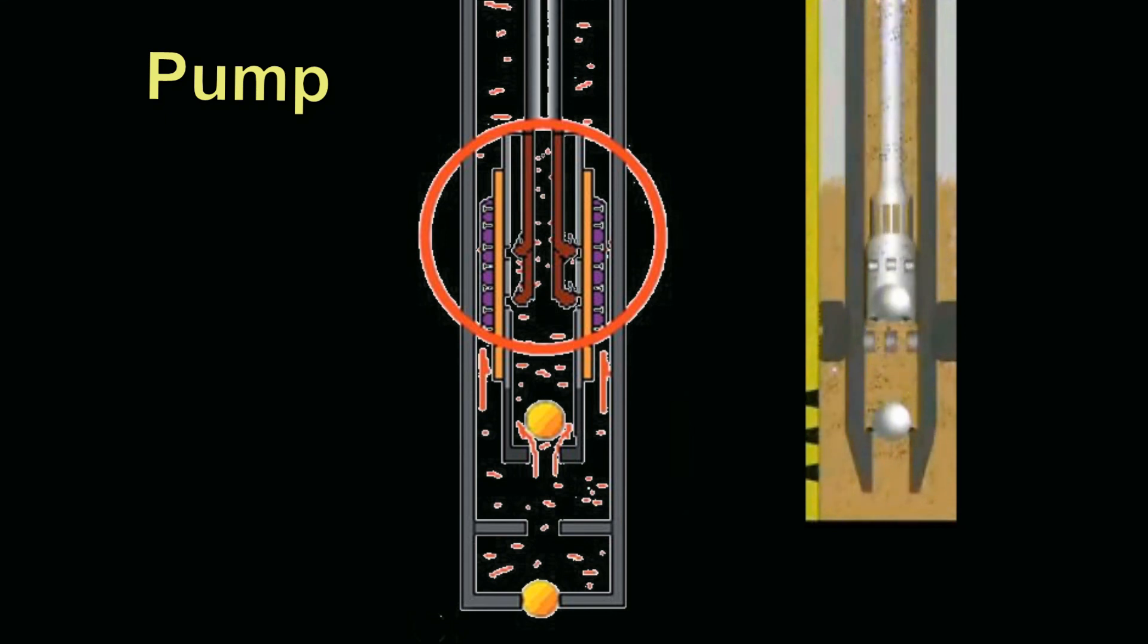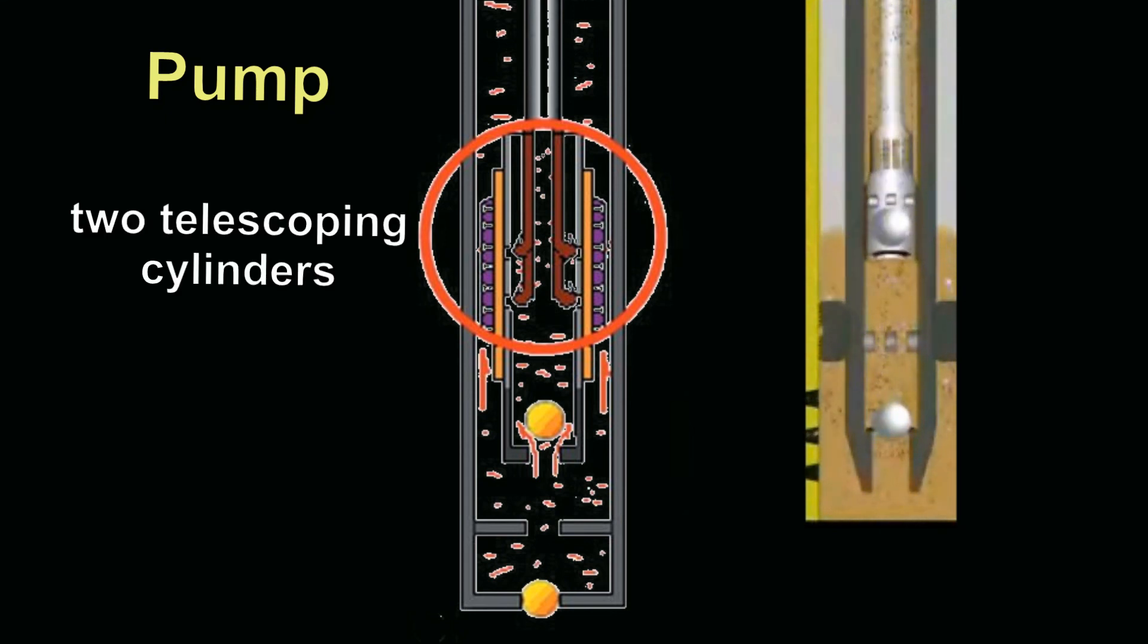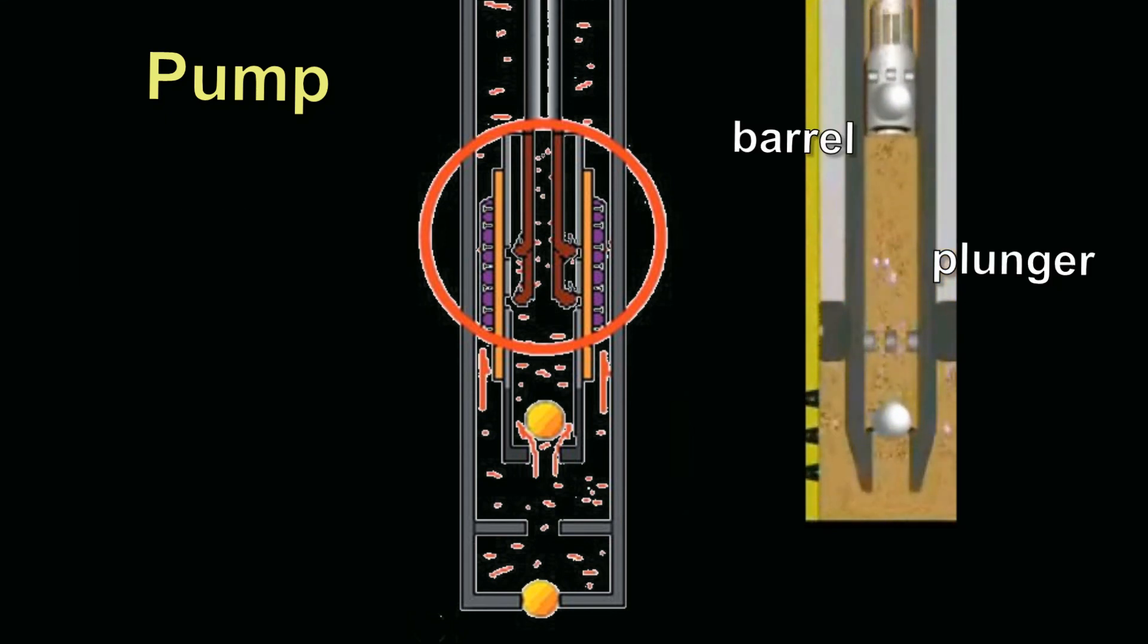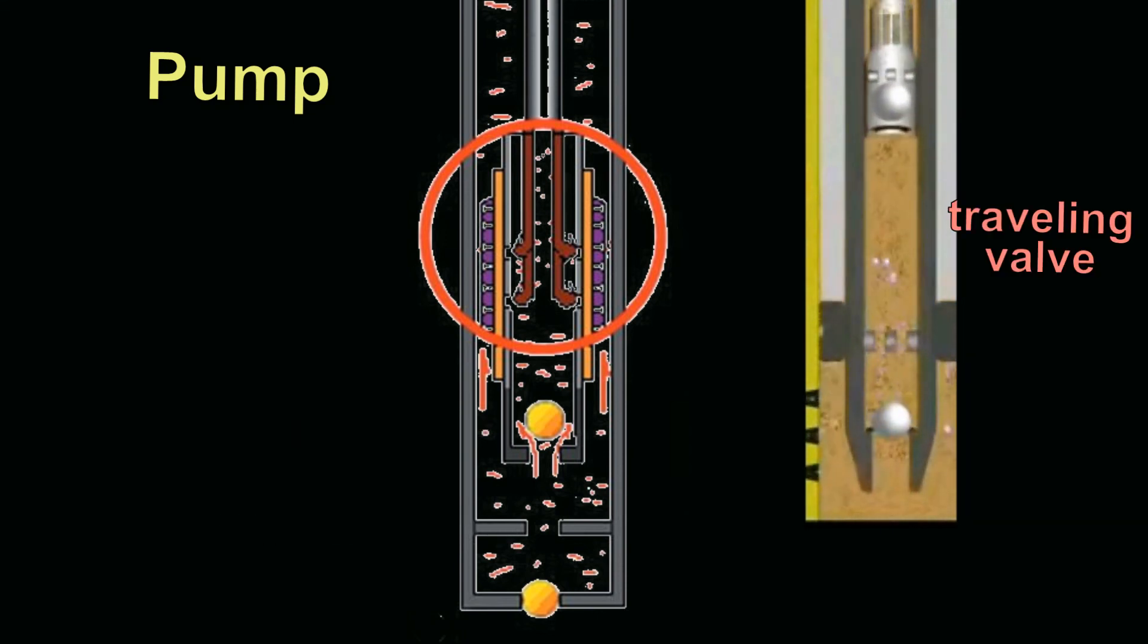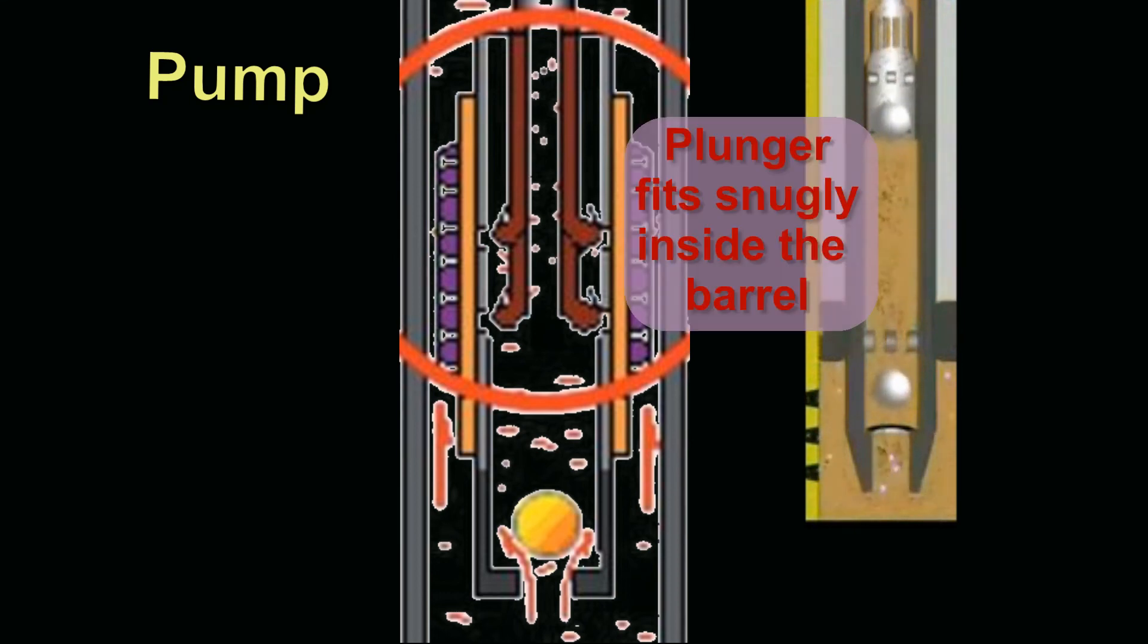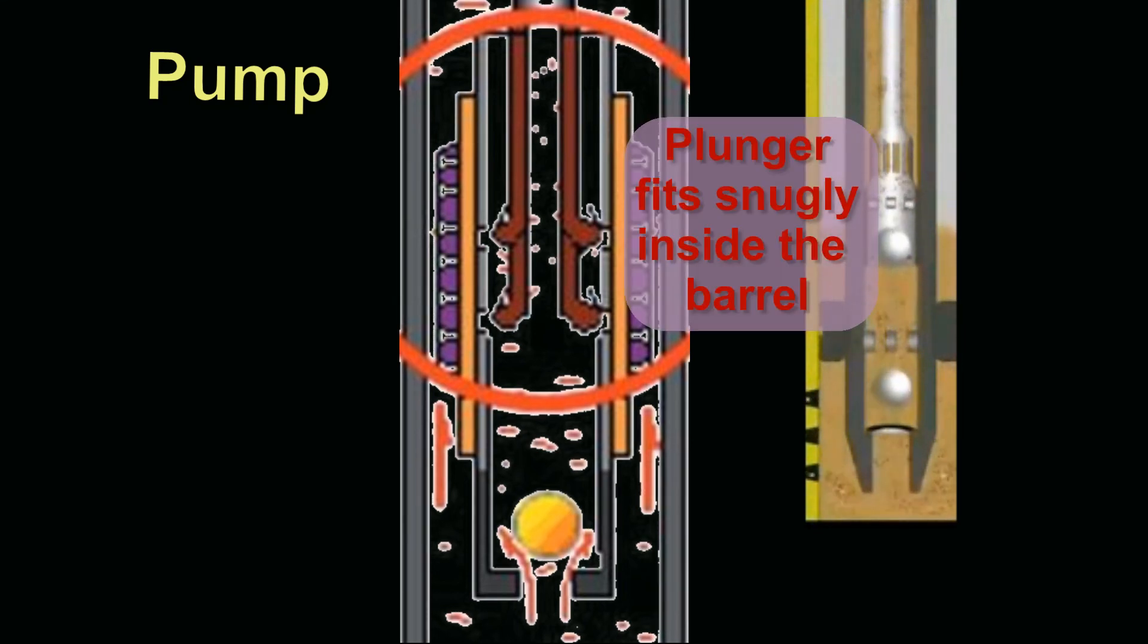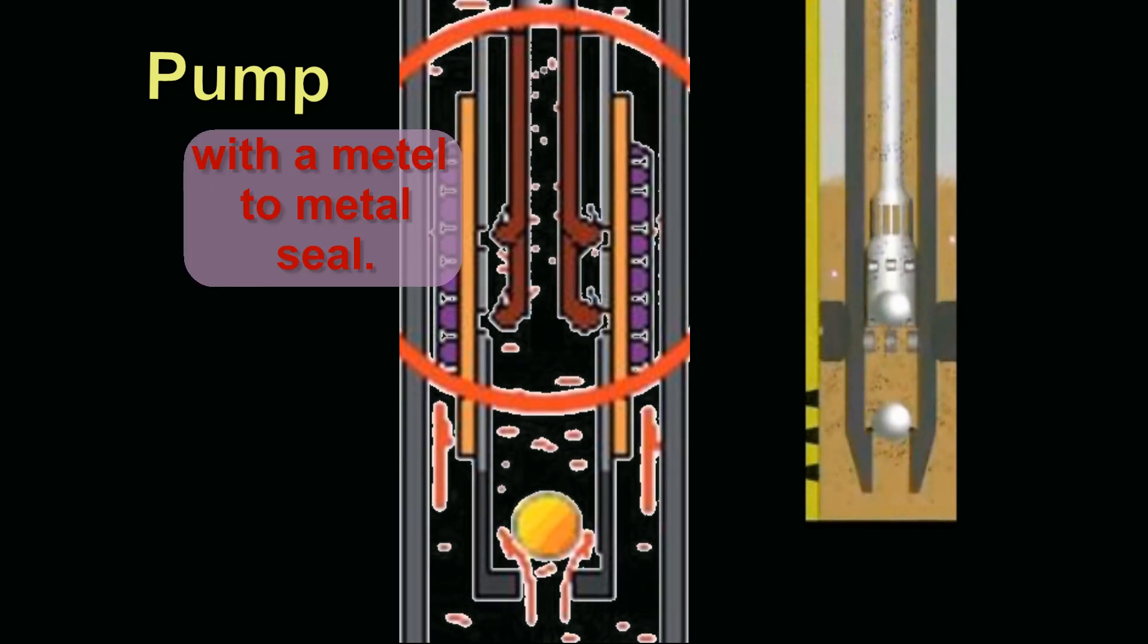A pump consists of two telescoping cylinders called the plunger and the barrel. In addition, there are two ball and seat valves. The uppermost valve is called the traveling valve and the valve at the bottom is the standing valve. The plunger fits snugly inside the barrel with a metal to metal seal.